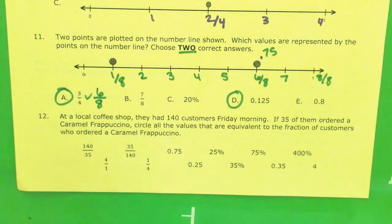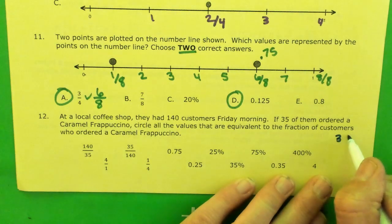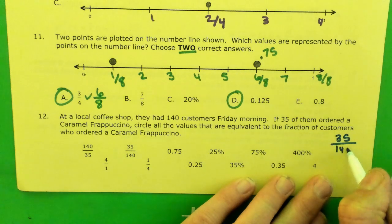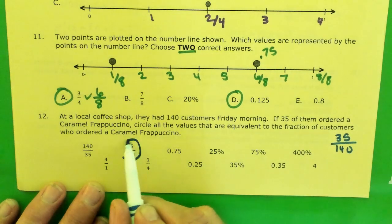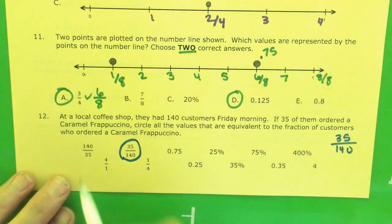Last question. At a local coffee shop, they had 140 customers on Friday morning. If 35 of them ordered a caramel frappuccino, circle all the values that are equivalent to the fraction of customers who ordered a caramel frappuccino. I know that would be 35 customers out of 140. So here's one answer. I know this one's wrong. That's backwards.